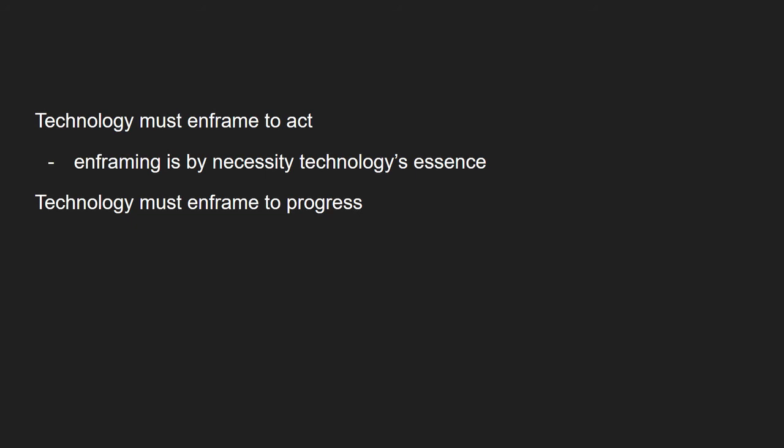Therefore, for technology to complete more and more complex actions, it must be able to understand and categorize the world to greater and greater extents. As the astute among you may have noticed, the ordering and categorization of the world is enframing. What I have outlined here is a pragmatic explanation for firstly, why technology's essence is enframing. It must order and categorize to act. Secondly, why technology must enframe. To carry out more and more complex functions. Meaning, to develop and improve itself.